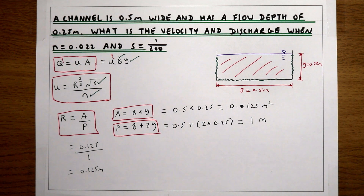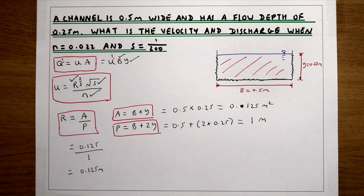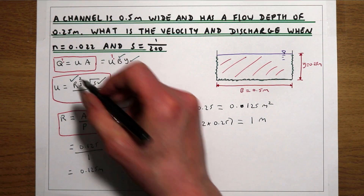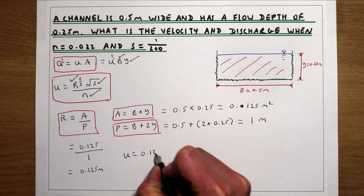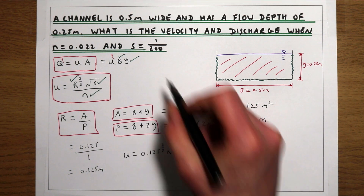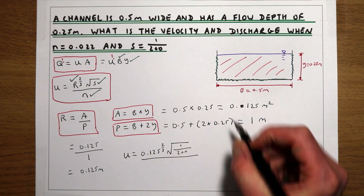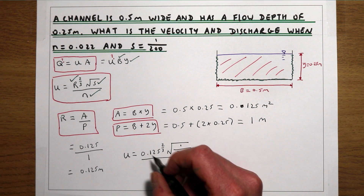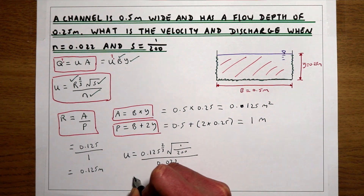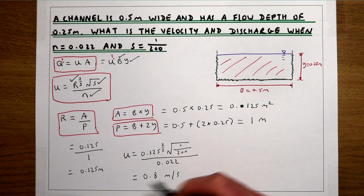We now have everything we need to calculate velocity. Using Manning's equation, velocity equals R to the power of two-thirds — so 0.125 to the power of 2/3 — times the square root of the gradient 1/200, divided by Manning's n of 0.022. That gives us a velocity of 0.8 metres per second.